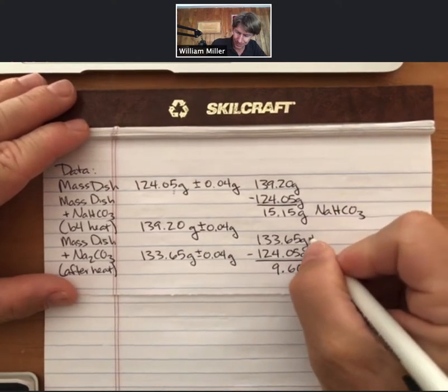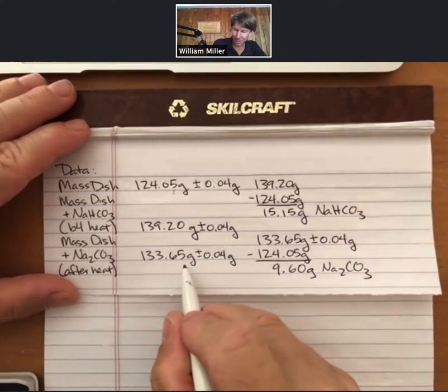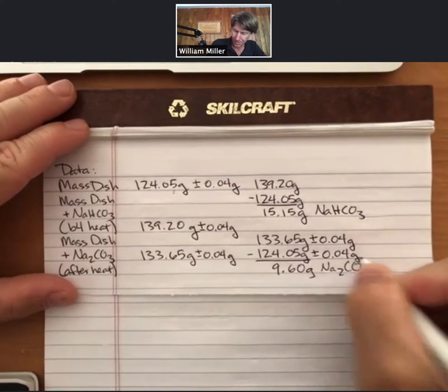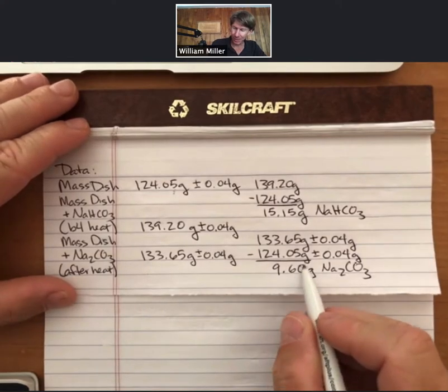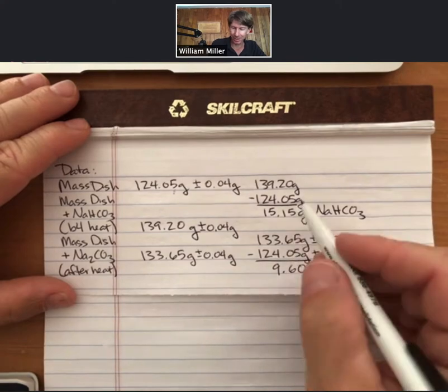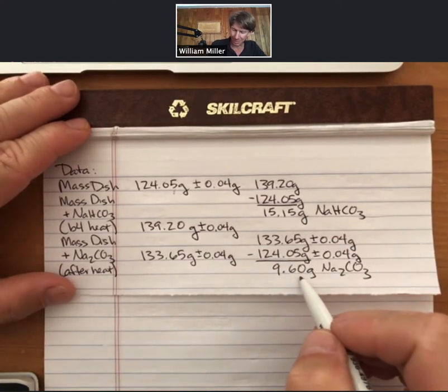Each of these numbers is plus or minus 0.04 grams. The question is, what is the error of this number right here? As the lab states, there is an example, and it's very similar to the example for the sodium bicarbonate. The example goes like this: